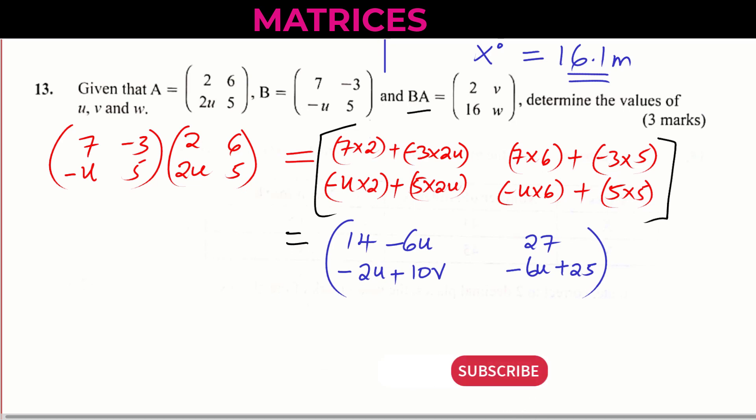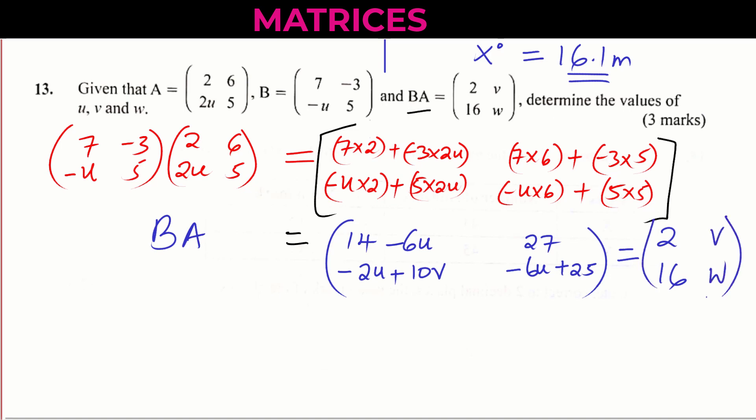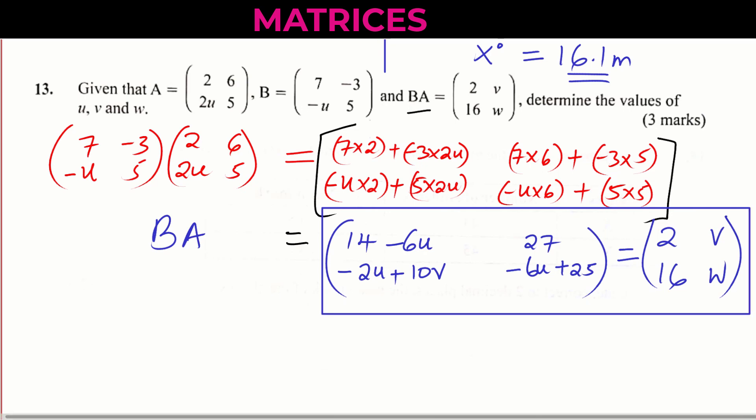So that is the product BA. And you're given that BA, this product, is equivalent to 2, V, 16, W. So using these, using now whatever we have here, it is possible now to be able to get the values of U, V, and W.